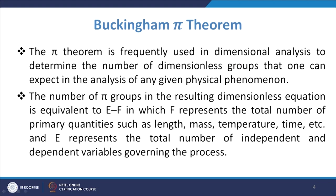Here you determine the number of dimensionless groups, which will be equivalent to E minus f. Here f represents the total number of primary quantities required for expressing the dimensions, and E represents the total number of independent and dependent variables governing the process. So E minus f tells you the number of Pi groups.